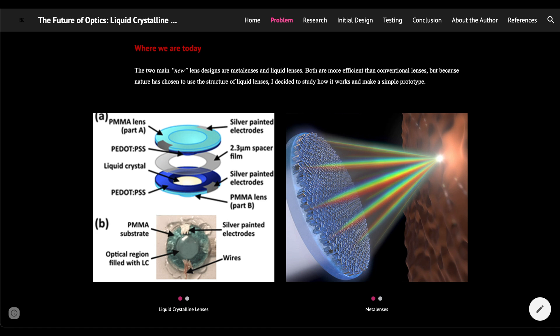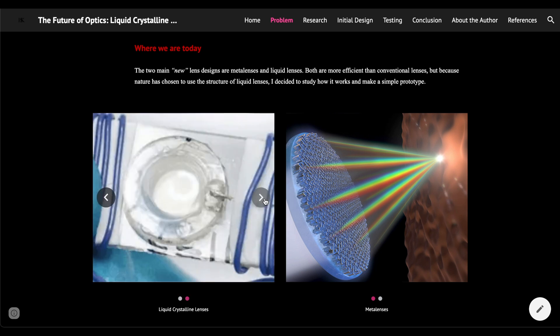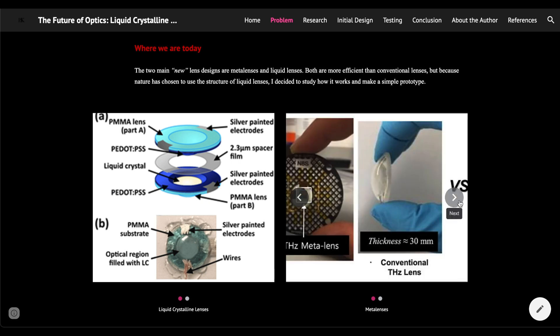The two main new lens designs are meta lenses and liquid lenses. Both are way more efficient than conventional lenses. But because nature has chosen to use the structure of liquid crystalline lenses, I decided to study how a liquid lens works and make a simple prototype.